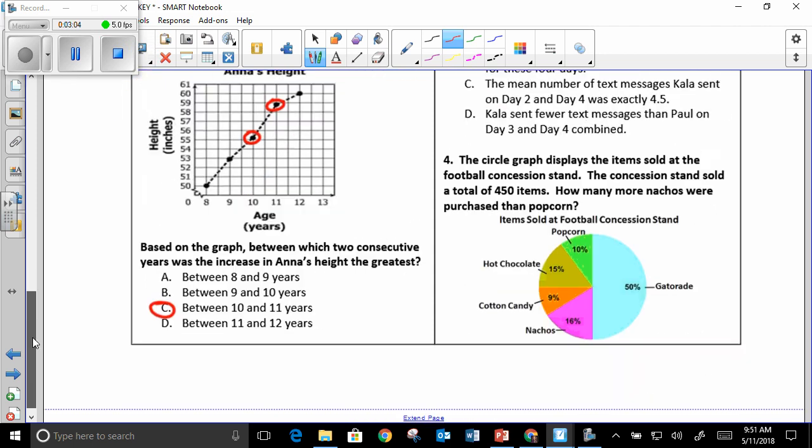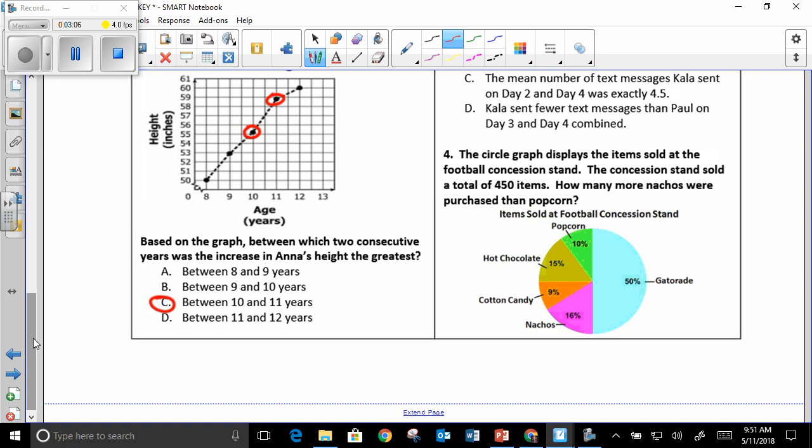Number four, you had to do a little math. This circle graph talks about items that were sold at a football concession stand. You need to know that there were 450 total items. So you should have that written down. How many more nachos were purchased than popcorn? Well, nachos is 16%, popcorn is 10%.